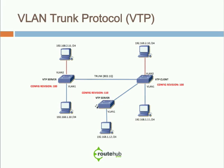This switch only has one VLAN — VLAN 1, there is no VLAN 2. It sends out VTP messages that the client and server will hear. They will say the config revision number is 110, which is higher than their current 100, so they will accept those changes — meaning VLAN 2 gets removed from their table.